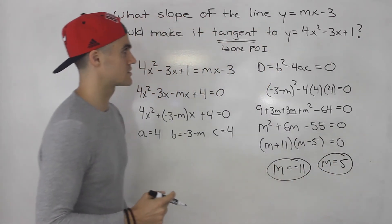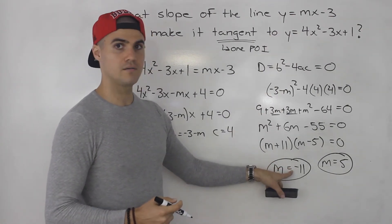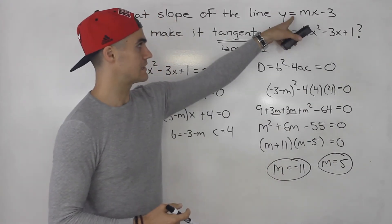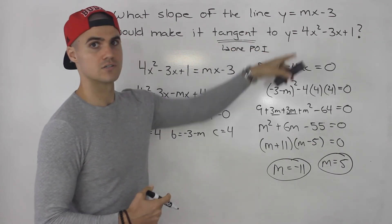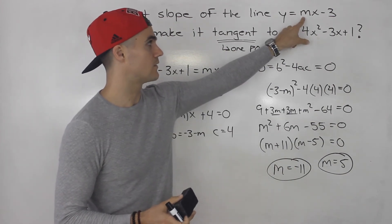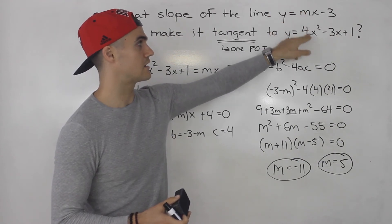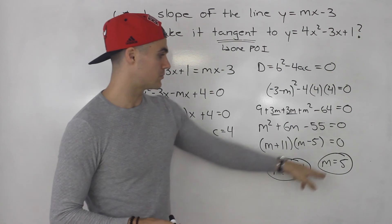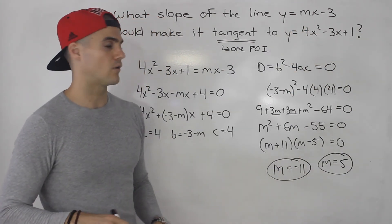So there's actually two solutions to this question. If the slope of this line is either negative 11 or 5, then this line and this quadratic are only going to have one point of intersection — the line is going to be tangent to that quadratic. You can actually try it out if you want: plug in negative 11 for m, find the number of points of intersection between this line and that quadratic, and you'll get one solution. Or plug in 5 for m, do the same thing, and you'll only get one solution.